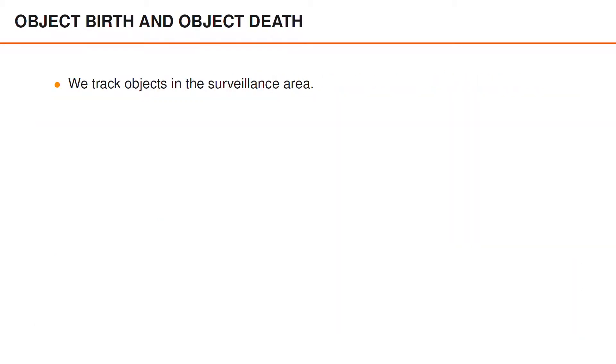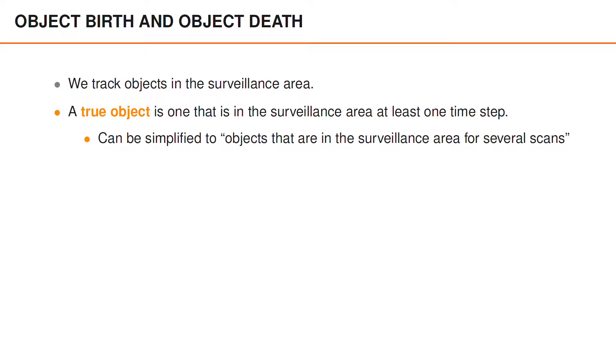How is this related then to object birth and object death? Well, we want to track objects in the surveillance area. A so-called true object is one that is in the surveillance area for some time, at the very least one single time step. Often this is simplified to say that a true object has to be in the surveillance area for a couple of scans or time steps. However, in the very most general case, a single time step is enough.